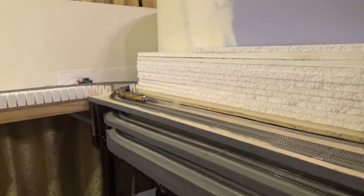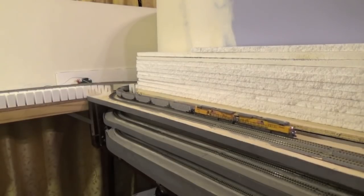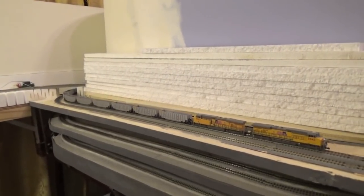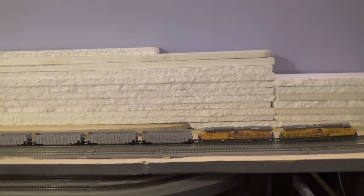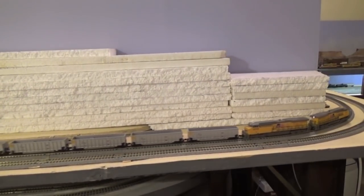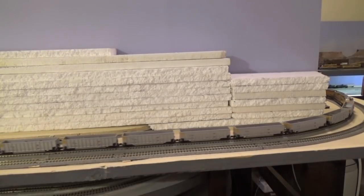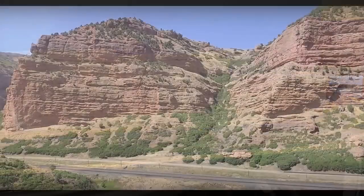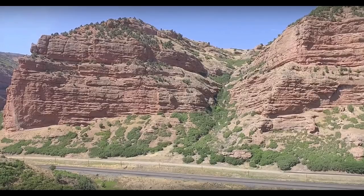Right now it looks like a pile of styrofoam, but I will be carving it to look like the cliffs of Echo Canyon. And soon I will be able to show you my progress. When it's done I hope it will capture the feel of the prototype which looks like this. If you look closely you can see the Union Pacific tracks in this photo.